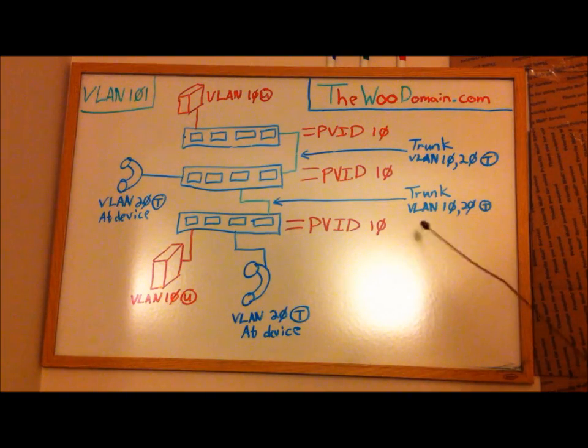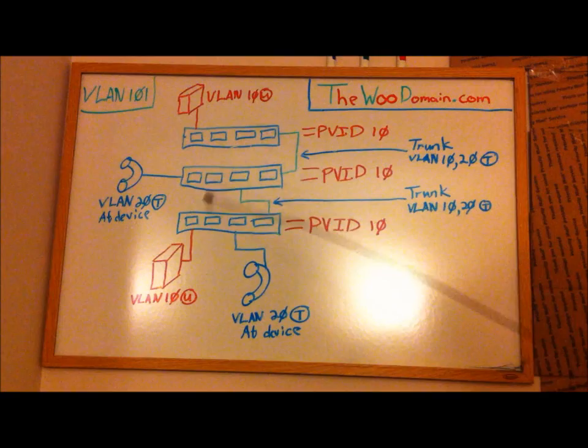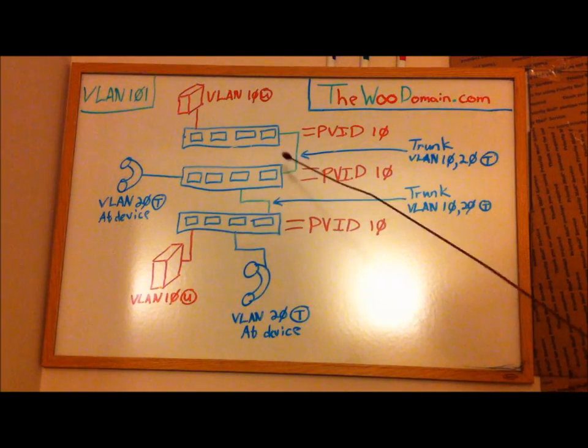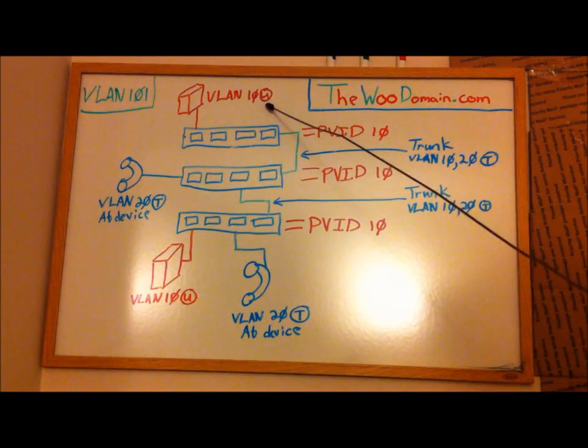So, basically, where we're at is we have a default PVID of 10, and it's an untagged VLAN. So, again, any device that's plugged into this switch that isn't VLAN-aware will pass traffic through VLAN 10 untagged.